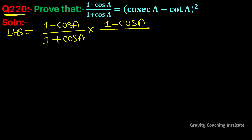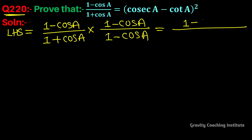We multiply numerator and denominator by (1 - cos A), so LHS becomes (1 - cos A)² in the numerator. The denominator has (1 + cos A)(1 - cos A), and we will use the identity (a + b)(a - b) = a² - b².